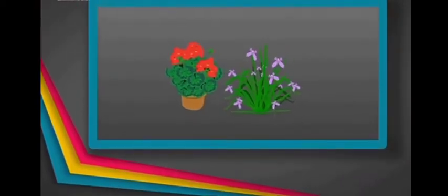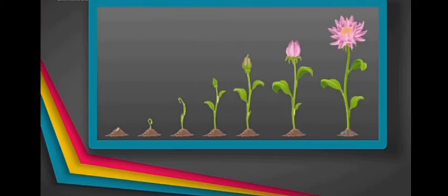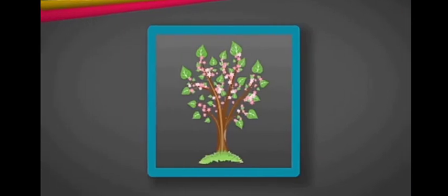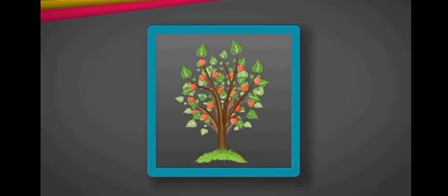Flowering plants. The plants that bear flowers are called flowering plants. Flowers are the reproductive organ of flowering plants. Flowering plants develop seeds in their fruits.